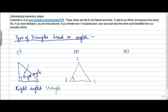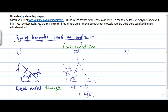Now let's take triangle ABC. If you look at angle B — leaving angle A and angle C for the time being — if it would have been a right angle triangle, the triangle would have looked a certain way. But in this triangle, angle B is less than 90 degrees, or less than a right angle. In such a case, this is called an acute angle, and this triangle is known as an acute angle triangle.